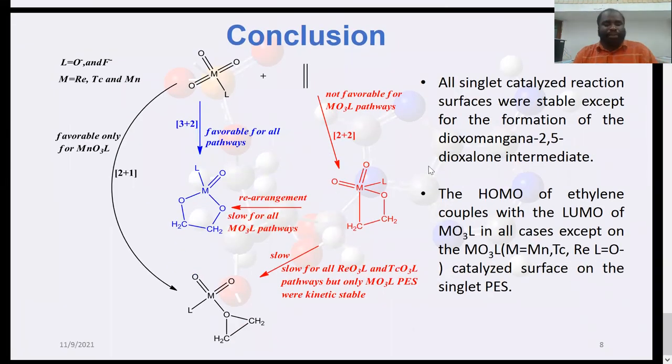In conclusion, it can be said that there was serious debate on the mechanistic details, but the addition for these types of reactions rather goes through the 3+2 pathway, and the direct 3+1 pathway is only feasible for MnO3F.